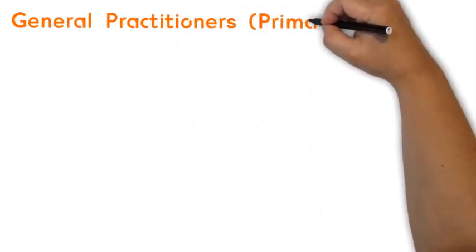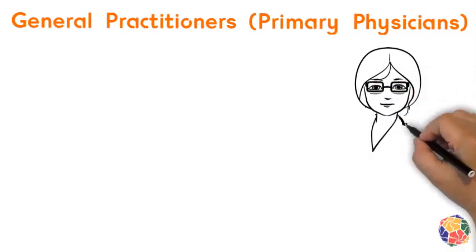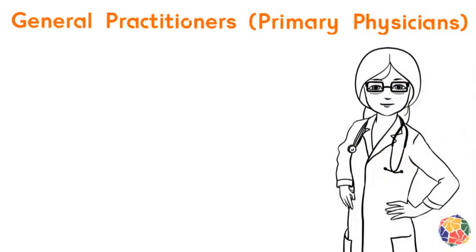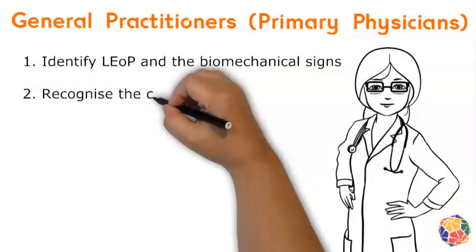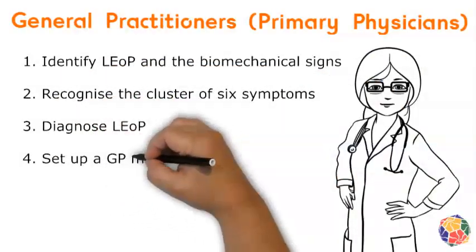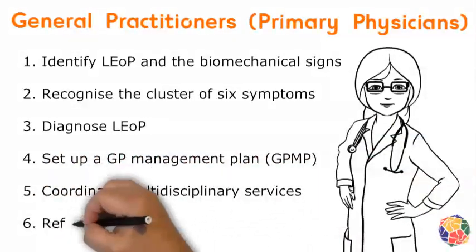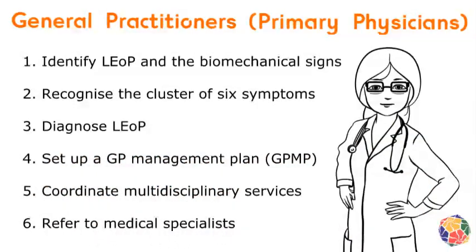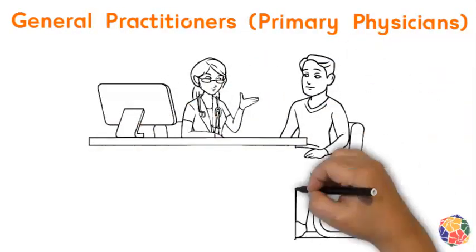Post polio informed general practitioners — GPs — are able to identify and diagnose someone who is experiencing late effects of polio. This is the cluster of mostly biomechanical signs and the six symptoms that are related to polio exposure. Once this diagnosis is established, many people benefit from their GPs setting up a management plan and coordination of a multidisciplinary health team. GPs may also refer their patient to specialist doctors for opinions and guidance.